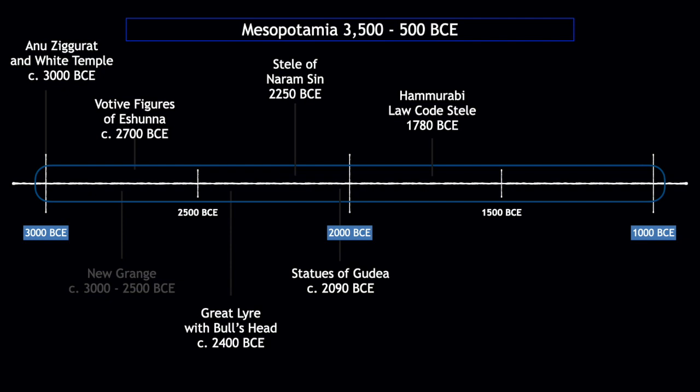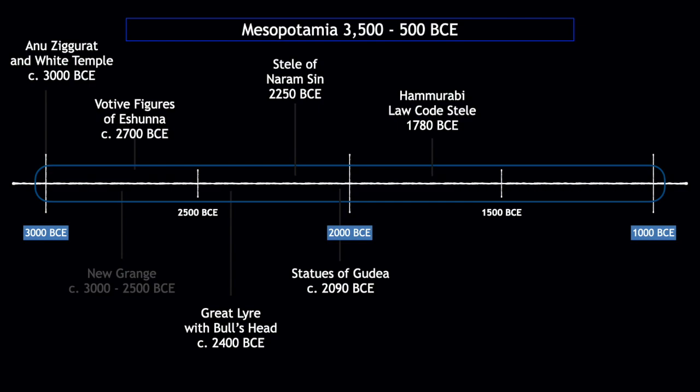Some of these objects have writing on them and we understand the writing, so we really know the names of the rulers and understand what they were trying to get across in these works of art. There will be a little less guesswork from now on — not that we understand exactly what they were going for, but we have a better idea now. I'm going to give you a quiz at the end of this lecture based on four images, so pay close attention.